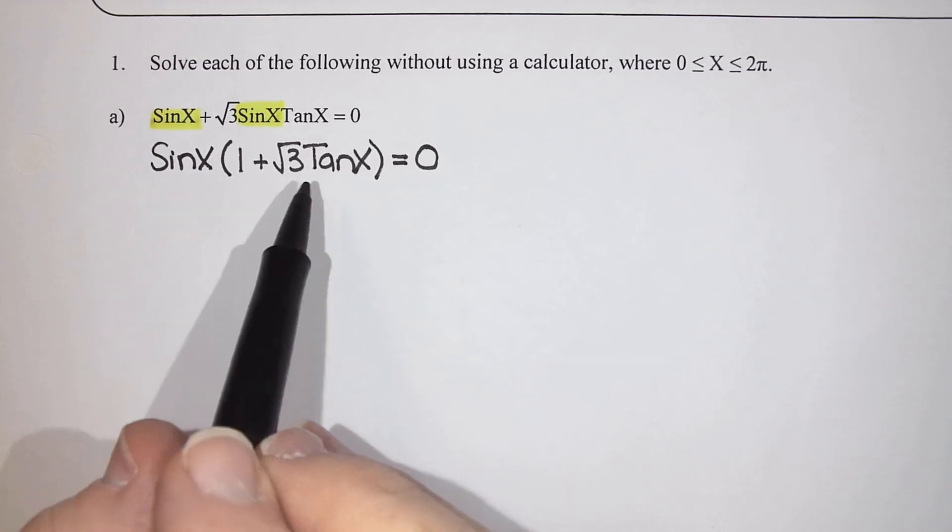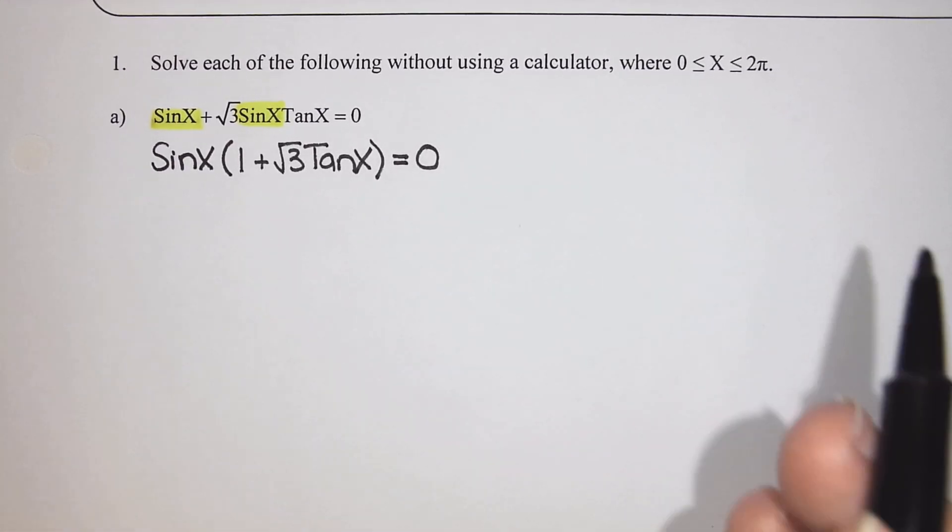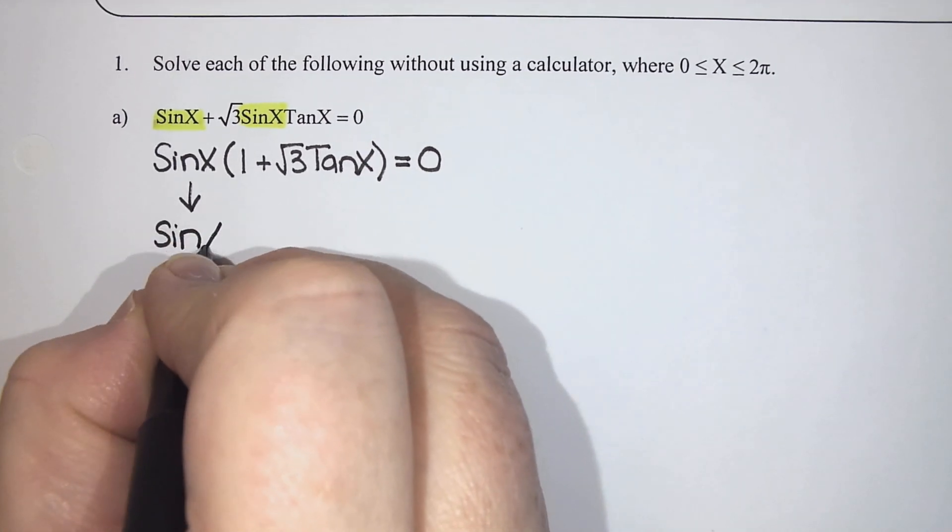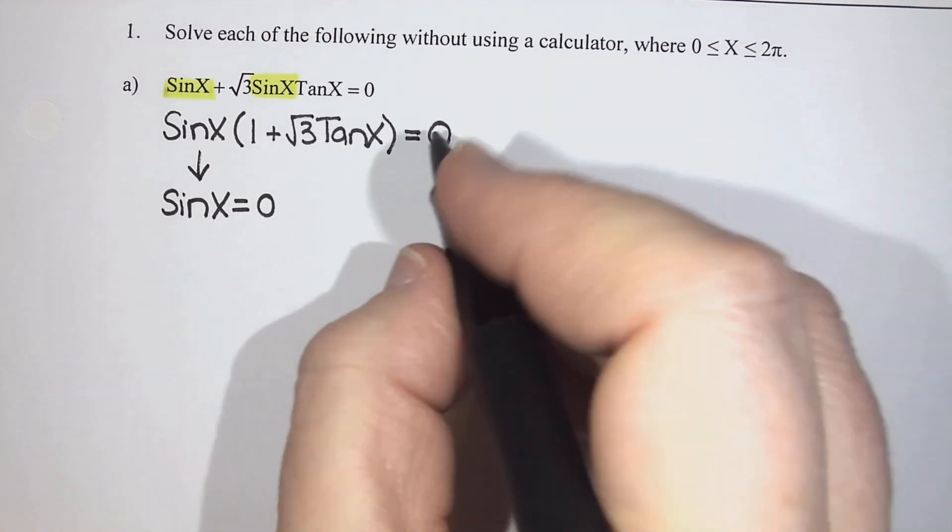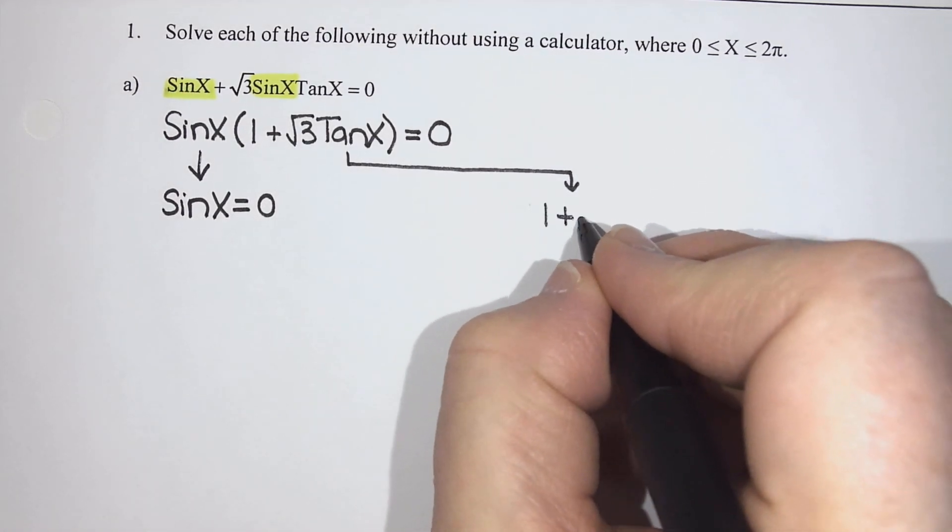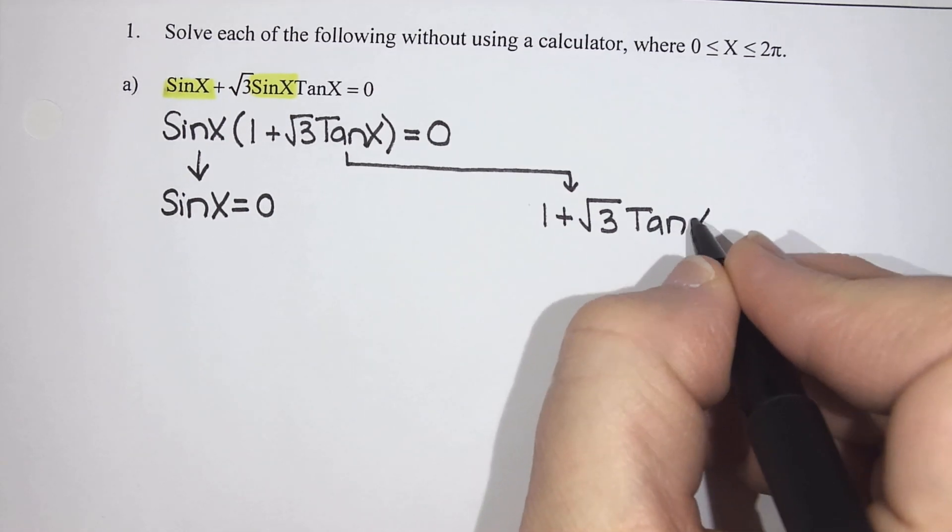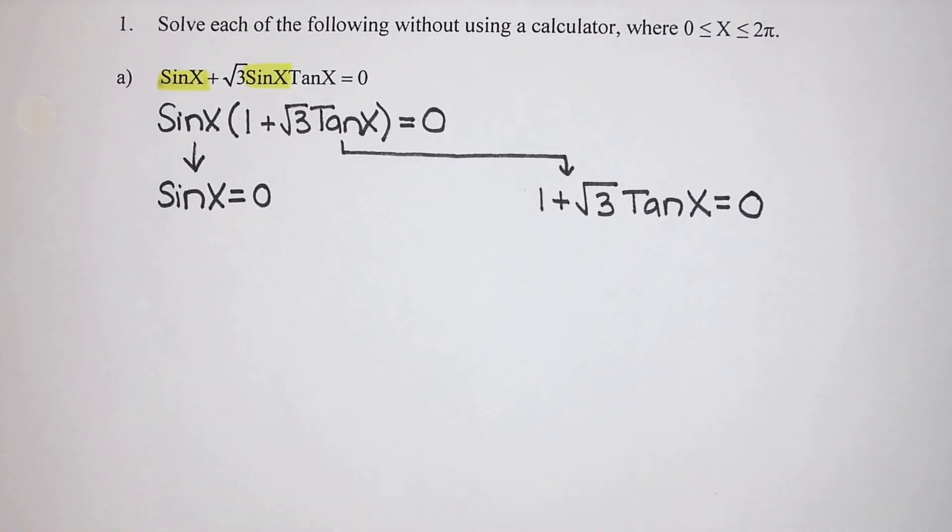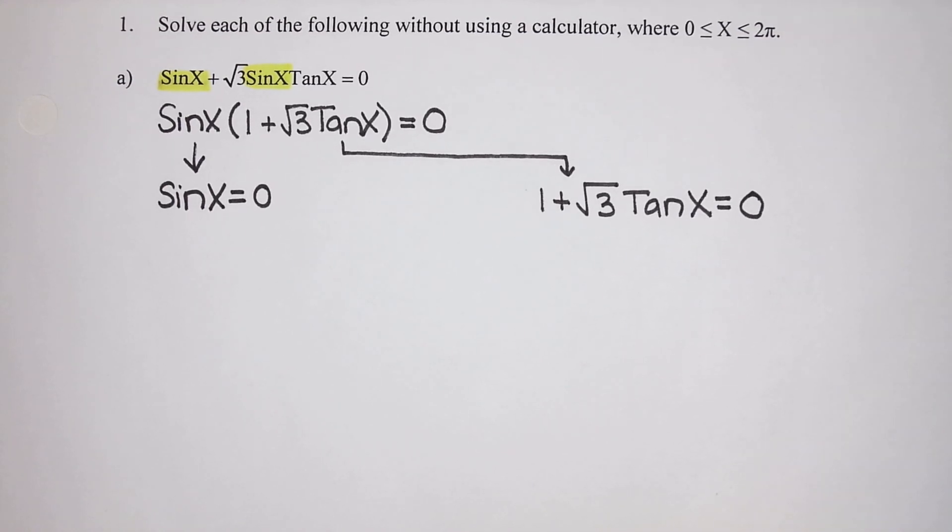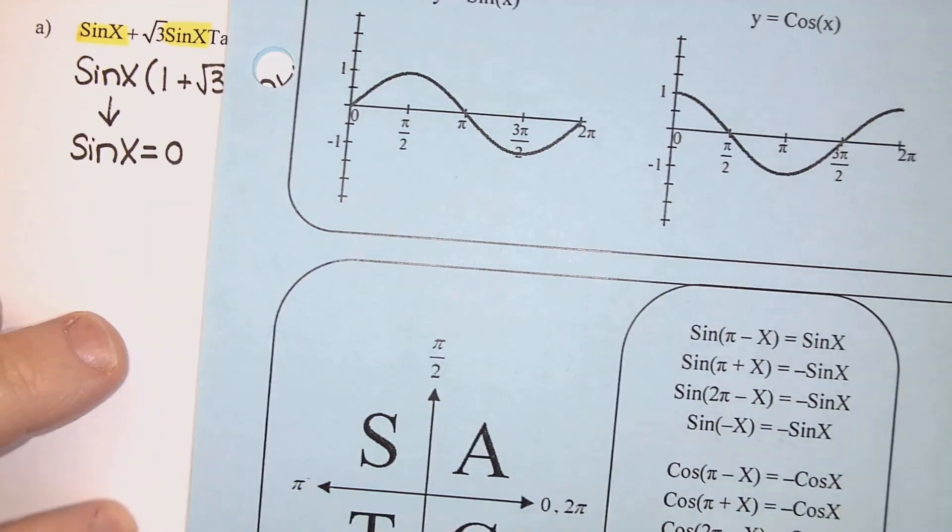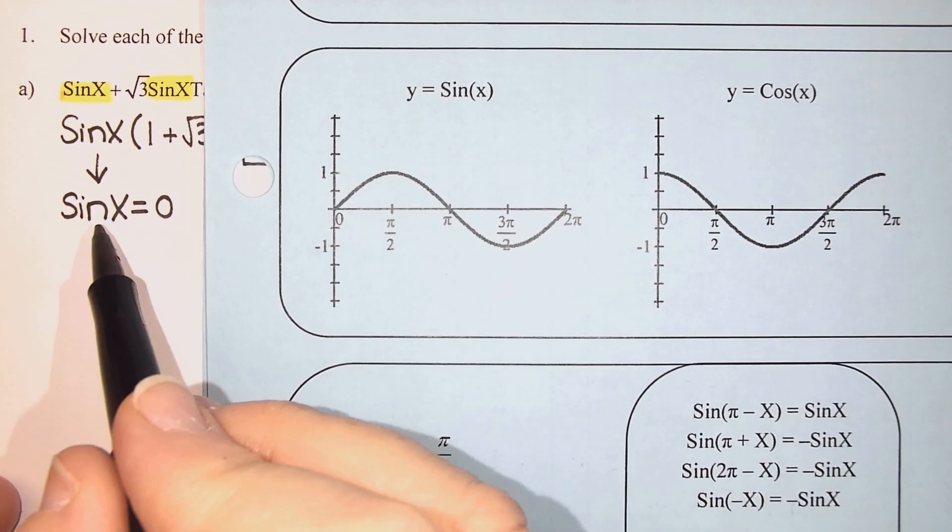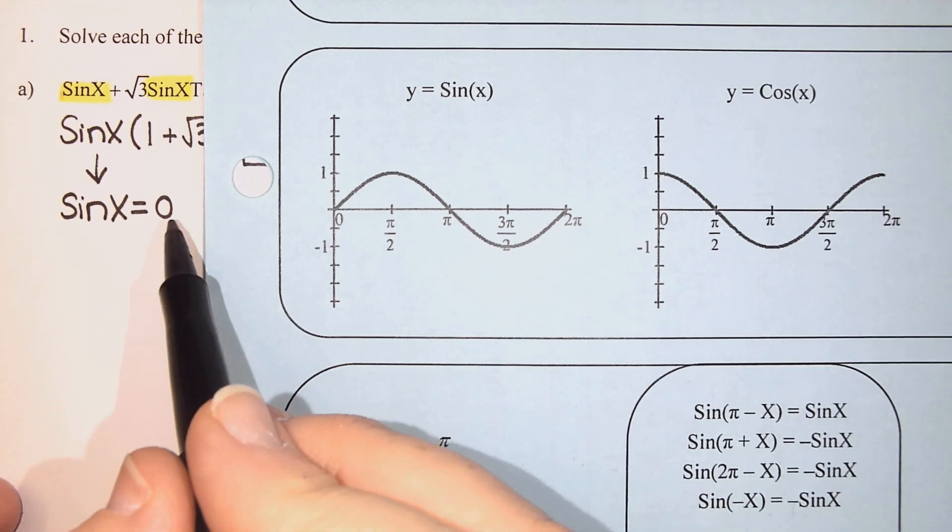Now once you've factored and you've made something a multiplication question, you can set each part equal to zero and solve. So I'm going to look at what makes sin(x) equal zero, and then I'm also going to look at what makes 1 + √3·tan(x) equals zero. Let's start with sin(x) = 0. We would like to look at the graph to help us figure this out. So I am going to look at my graph of sin(x). Our goal is to try to figure out what angle did we take sine of to get an answer of zero.